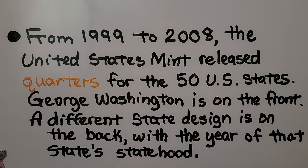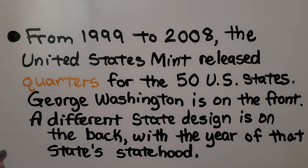From 1999 to 2008, the United States Mint released quarters for the 50 U.S. states. George Washington is on the front, and a different state design is on the back with the year of that state's statehood.